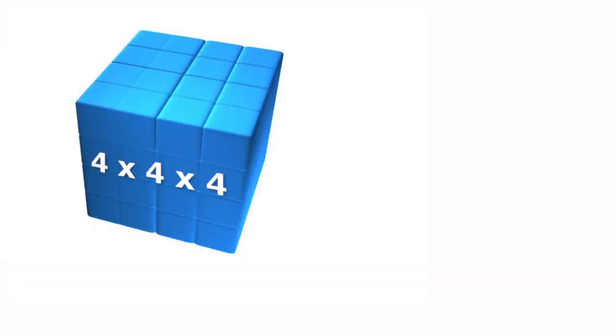So in the case of 4 cubed, which is three fours multiplied by one another, the base is 4 and the exponent is 3, or 4 to the power of 3.